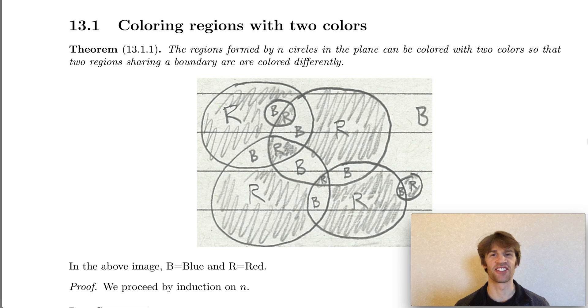In the picture here we have six circles drawn and we've colored the regions in red and blue, and adjacent regions are always colored one red, one blue.